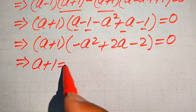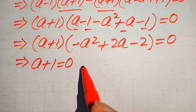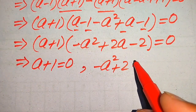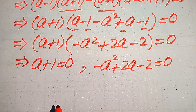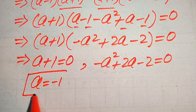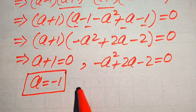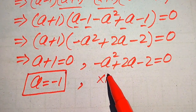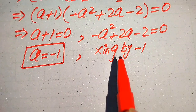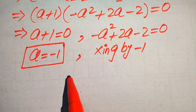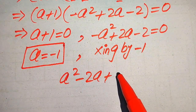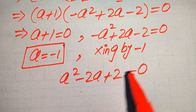We split this into two cases. Case one: a plus one equals zero, giving a equals minus one. Case two: minus a squared plus two a minus two equals zero. Multiplying both sides by minus one gives a squared minus two a plus two equals zero.